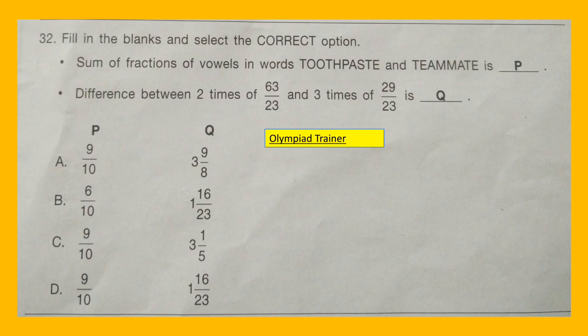Question 32: Fill in the blanks and select the correct option. P is the sum of fractions of vowels in the words 'toothpaste' and 'teammate'. Q is the difference between 2 times of 63/23 and 3 times of 20/23. The options are given below.